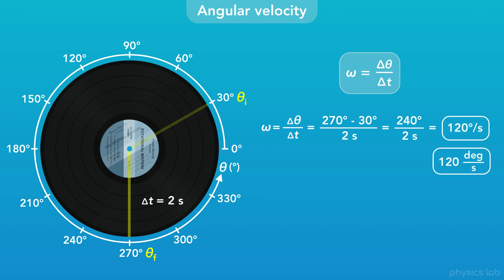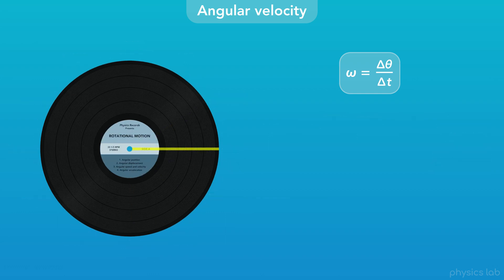That means that every second, the record rotated 120 degrees. Degrees per second is one unit we can use, but the SI unit for angular velocity is radians per second.